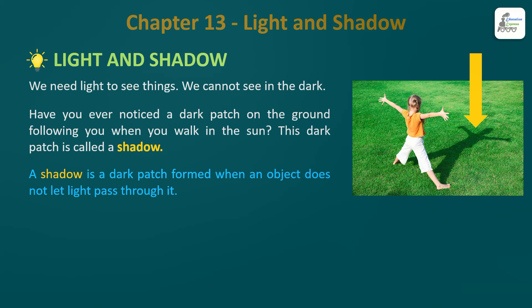What is shadow? A shadow is a dark patch formed when an object does not let light pass through it. Thoda sa hard hai, lekin mein samjhaunga aapko Hindi mein bhi, English mein bhi. A shadow is a dark patch - yeh toh samajh mein aaya? Formed when - kabhi form hota hai when an object - object matlab koi bhi cheez. Yeh ladki jo hai yeh object ho sakti hai, aapki laati, kaati, stick, ya phir aapka scale - sab object hain. Pencil bhi object hai.